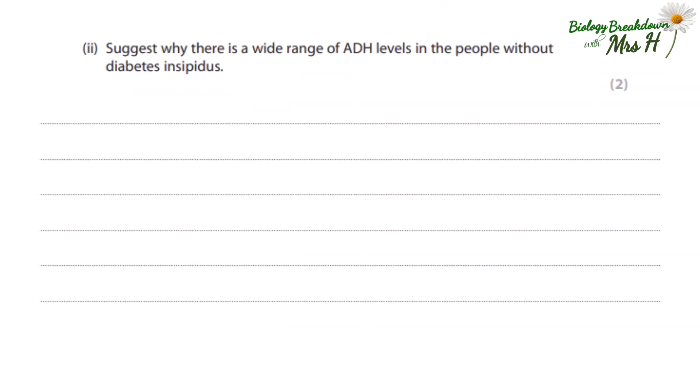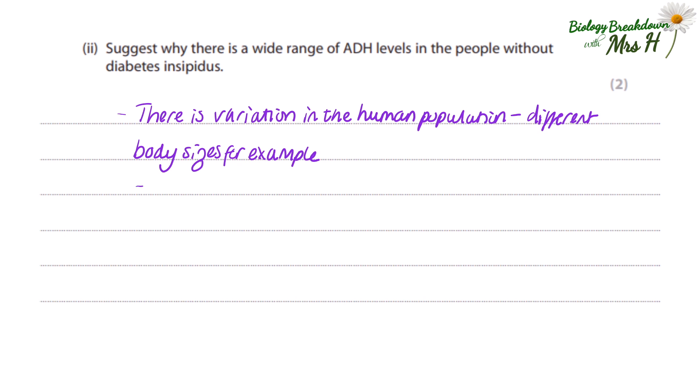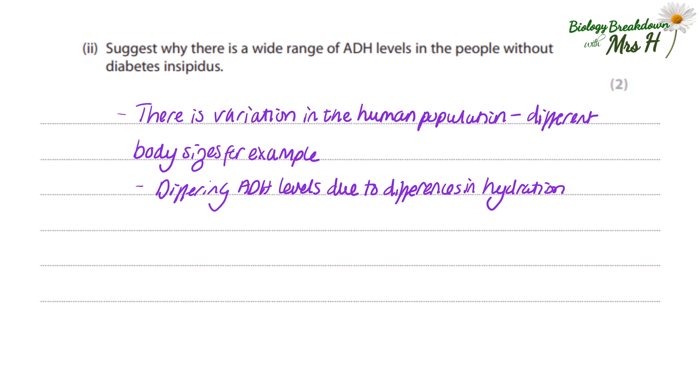Suggest why there is a wide range of ADH levels in the people without diabetes insipidus. Since the question asks you to suggest, there are a variety of reasons. There is variation in a population — people could have different body sizes, drink at different times, have different fluid and food intake, or exercise at different times. These daily fluctuations are responded to by the pituitary gland. You might also note that varying degrees of salt intake affect water retention and urine output.